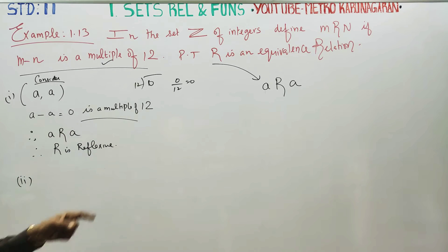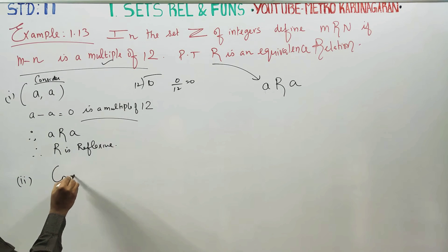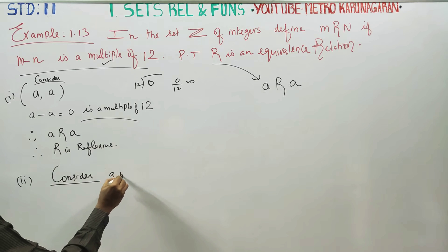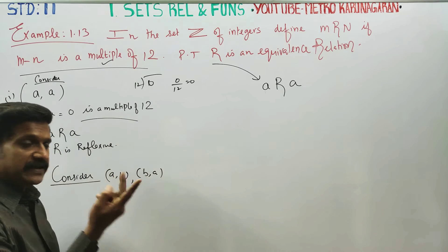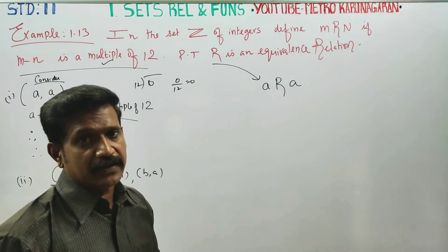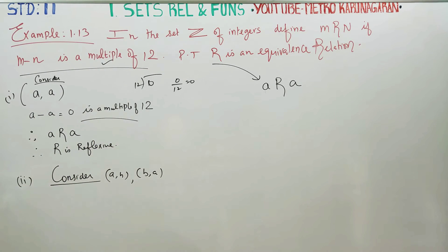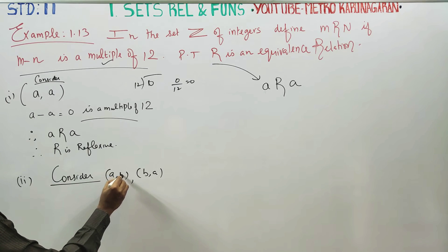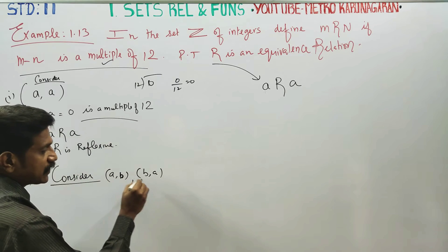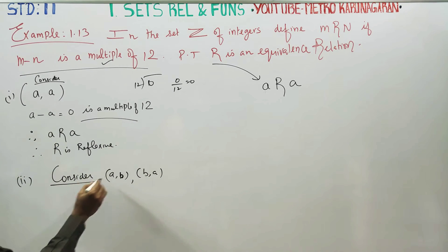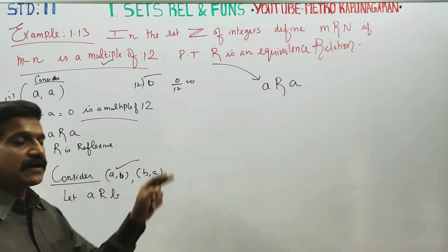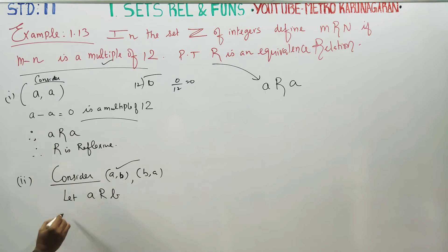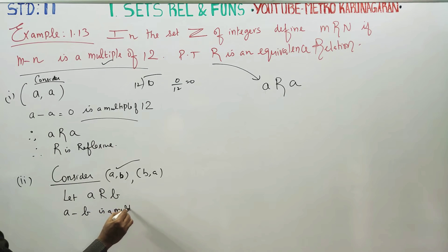Number two: Symmetric. Consider (a, b) and (b, a). Symmetry: if a is related to b, we must prove b is related to a. A is related to b — a minus b is a multiple of 12.